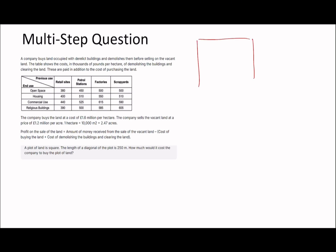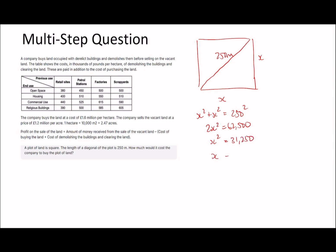Next question: a plot of land is square and the length of the diagonal is 250 metres. How much would it cost to buy the plot? You need to find the area first. Using Pythagoras: x² + x² = 250², so 2x² = 62,500, therefore x² = 31,250. The area is x times x, which is x², so the area is 31,250 m².